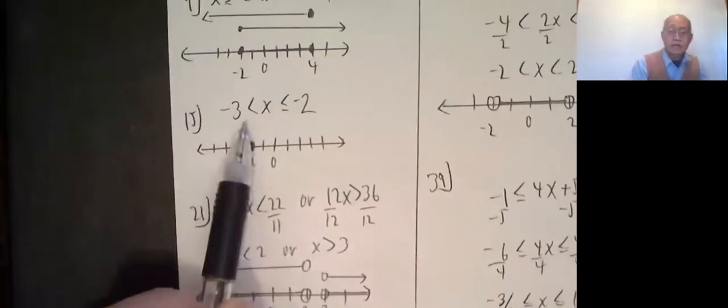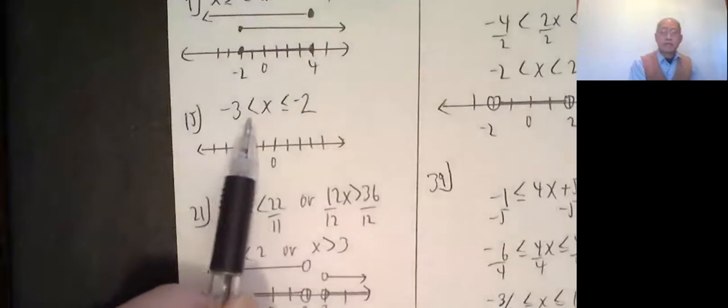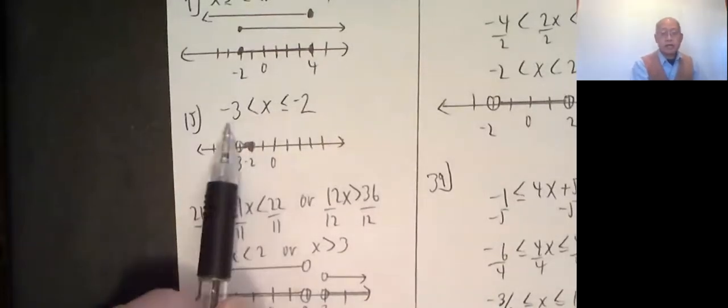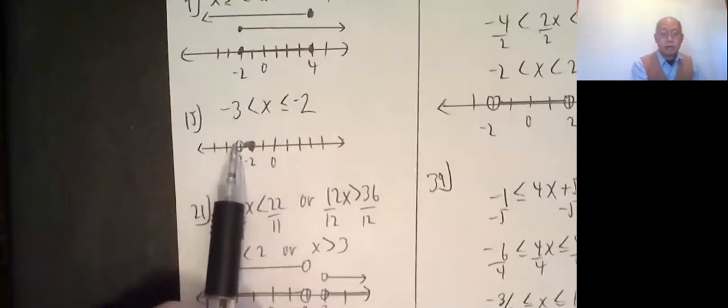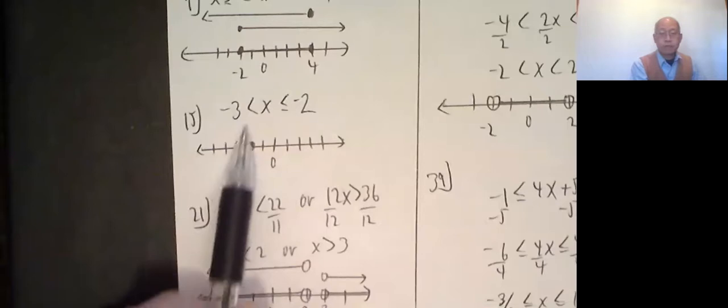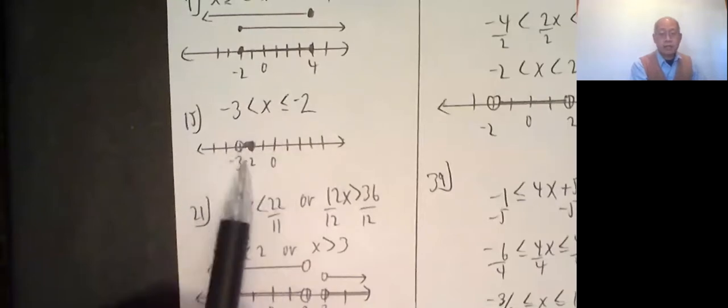15. When they write it like this, it is an and. Negative 3 is less than x, which is less than or equal to negative 2. The easiest way to do this is just put an open circle on negative 3, closed circle on negative 2, and then just shading everything in between. So this is an and case, but this is the fastest way to do it.